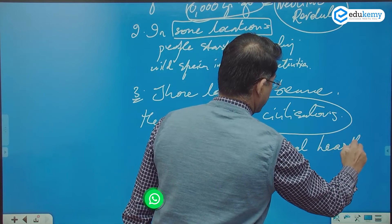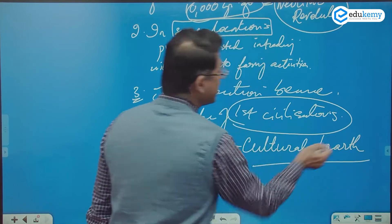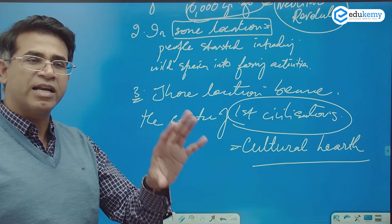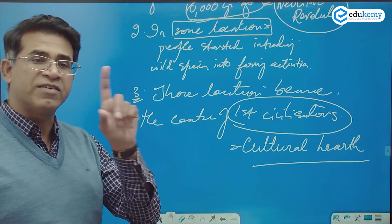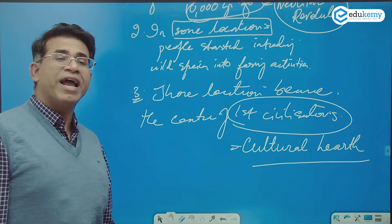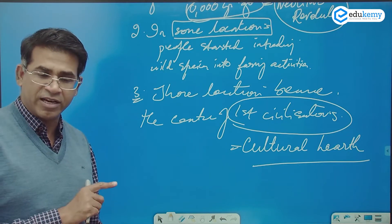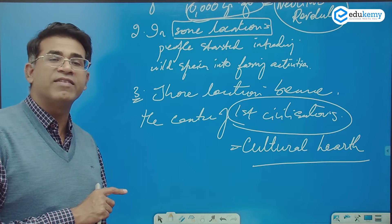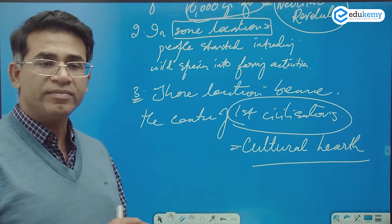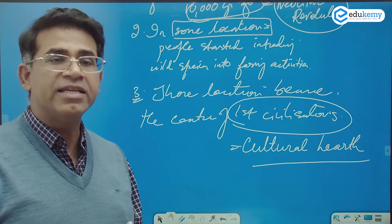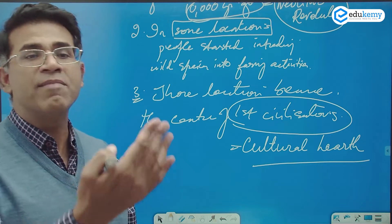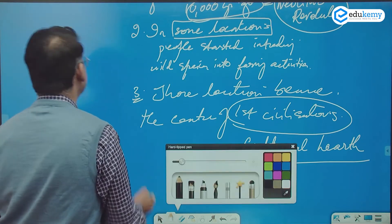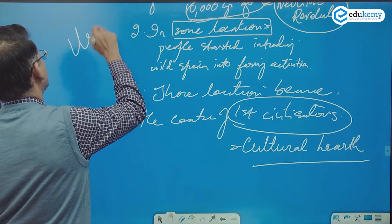Hearth means fire. The locations became the center of the first civilizations. Do you know where we had the first civilization? It was in Assyrian, Sumeria — southern Mesopotamia. There was an old city called Ur, U-R. This was the first civilization, in parts of the fertile Mesopotamian plains of Iraq, in the Tigris and Euphrates.